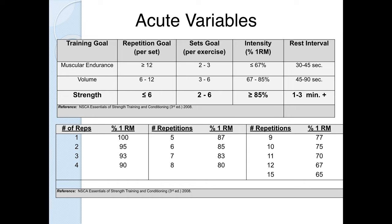Here are the acute variables for different general outcomes. Remember the chart on percentage of one rep max: if you can do one rep, that's your one rep max; three reps is about 93% of one rep max; seven reps is about 83% of one rep max. So if your goal is strength and you want to be lifting at least 80% of one RM, you know what weight to give clients. If they can do more than 12 or 15 repetitions, they're not necessarily developing strength — they're developing endurance, which is a slightly different outcome.